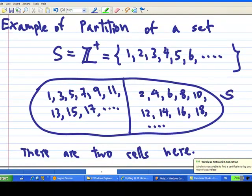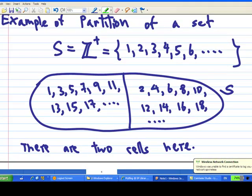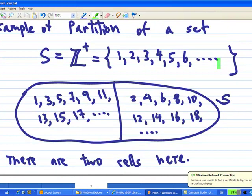And what are the examples of a partition? One example of a partition of a set will be, let's say S is the set of positive integers, Z+, which consists of 1, 2, 3, 4, 5, 6 and so on. Now in this case, I can partition the set of positive integers into two subsets.